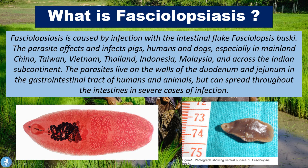So what is fasciolopsiasis? Fasciolopsiasis is caused by an infection with the intestinal fluke called Fasciolopsis buski. The parasite affects and infects pigs, humans and dogs, especially in mainland China, Taiwan, Vietnam, Thailand, Indonesia, Malaysia and across the Indian subcontinent. The parasites live on the walls of the duodenum and jejunum in the GI tract of humans and animals, but can spread throughout the entire intestines in severe cases of infection.